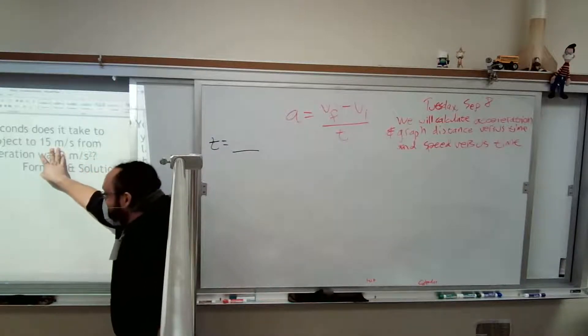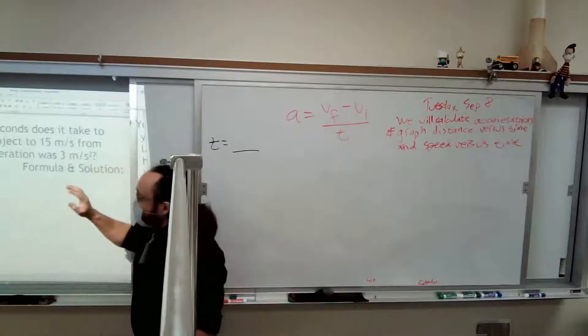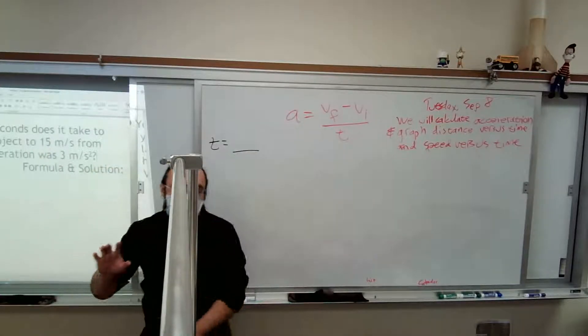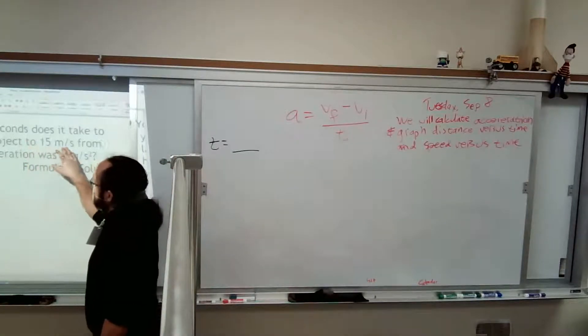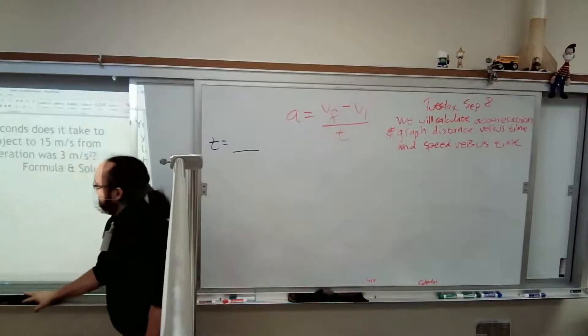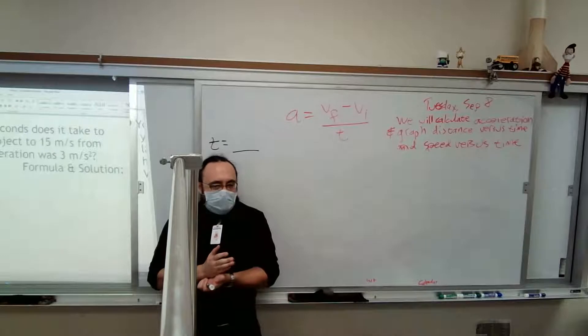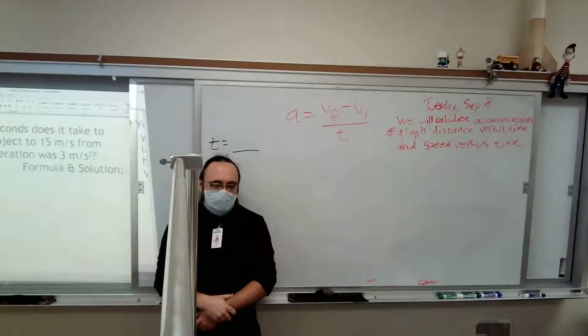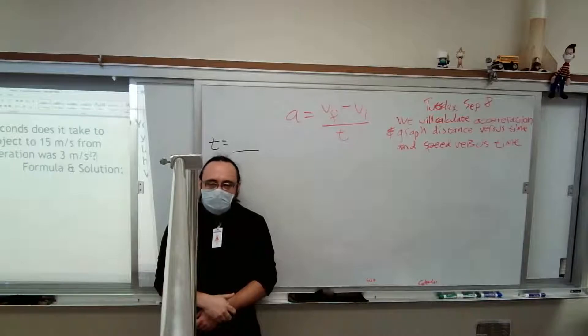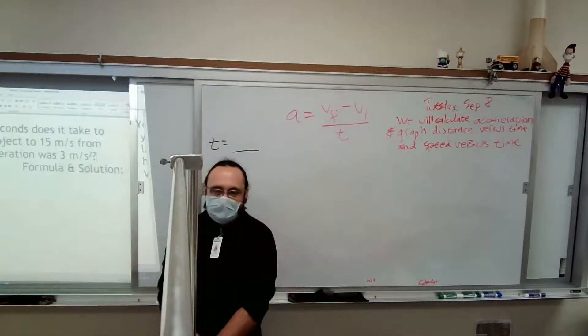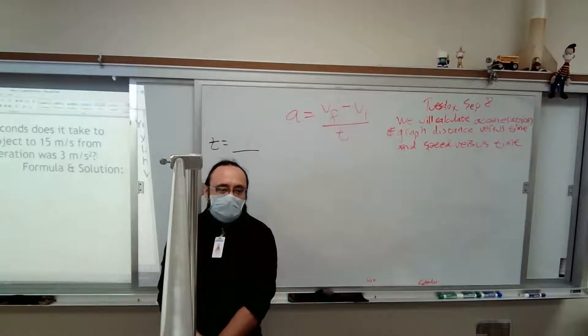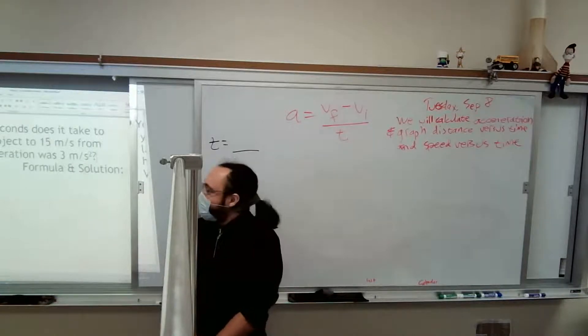It gives us this 15 first, but with final initial velocity, there are key words to look at. So it says accelerate an object to 15 meters per second from rest. Which of those chronologically, sequentially happened first? In the little story of the question, I like to think of these as stories, in the sequence of events, one of those speeds happened first. Jada, what do you think? Which one of these happened first? It says accelerate an object to 15 from rest.